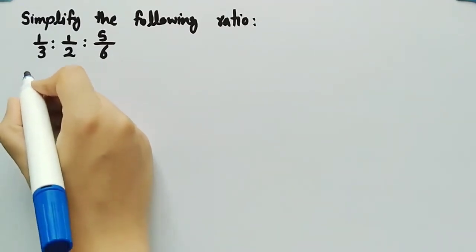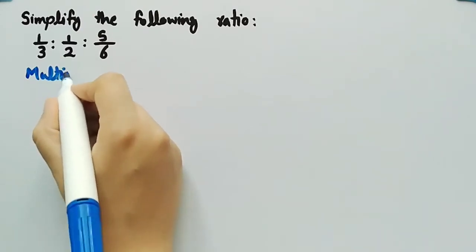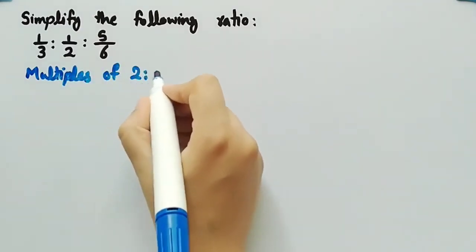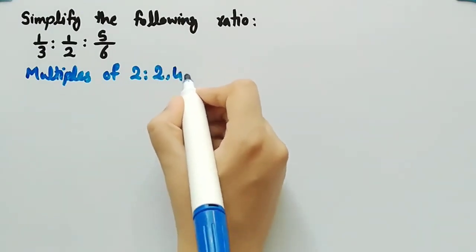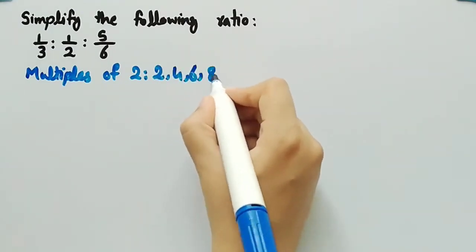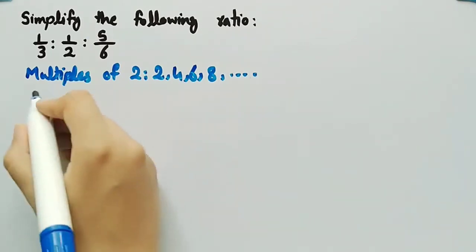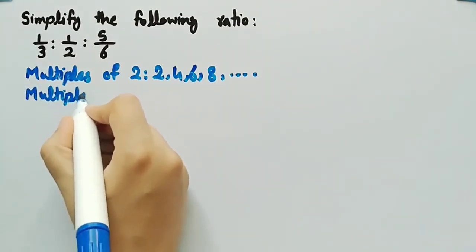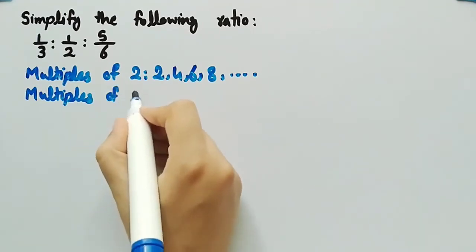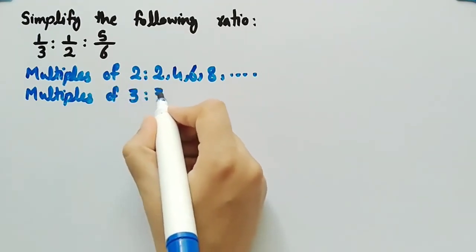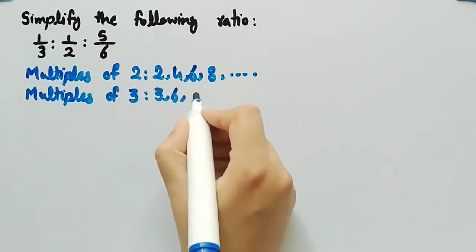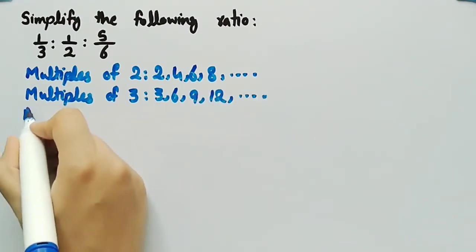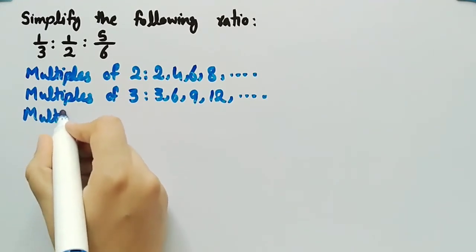Let's write multiples of 2 which are 2, 4, 6, 8, and so on. Now let's write the multiples of 3 that are 3, 6, 9, 12, and so on.